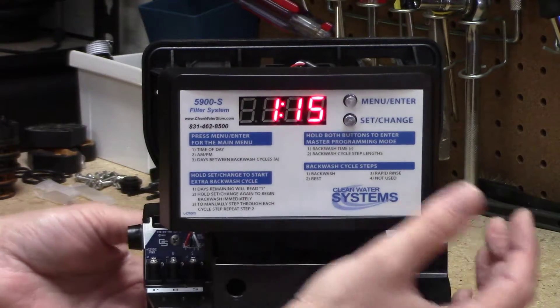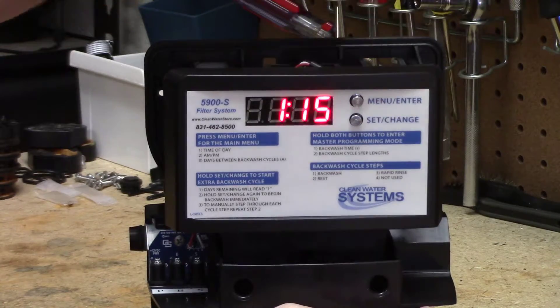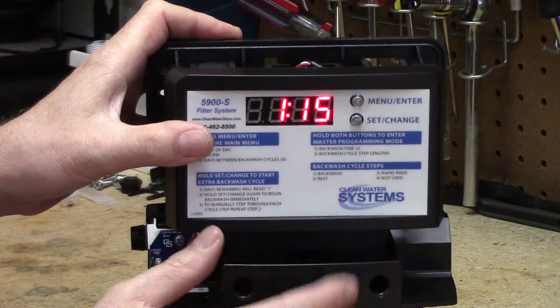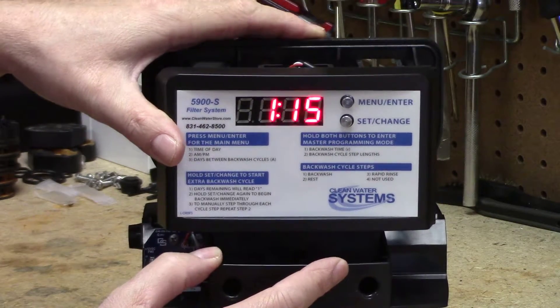So to go ahead and program it, let's first program the clock time. When you press the menu enter button and release it, all the clock time starts flashing. So it says 115 right now. Let's go ahead and change it to 130.